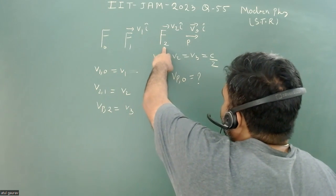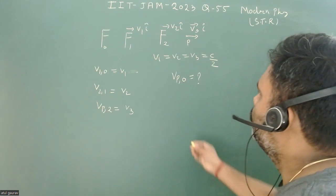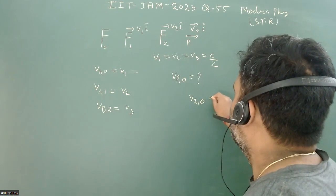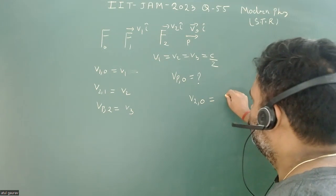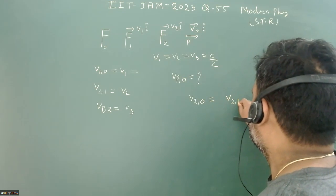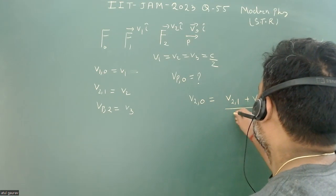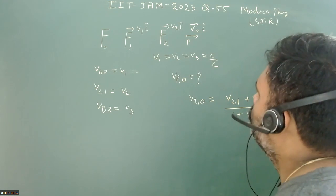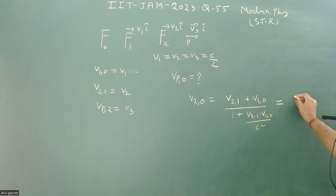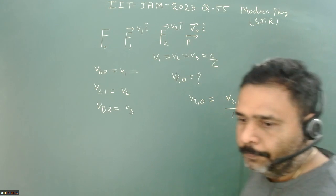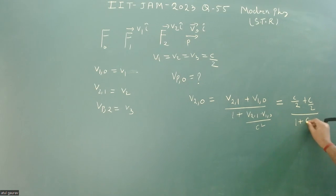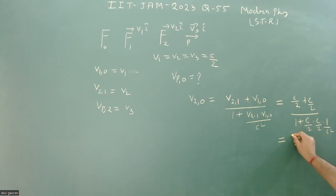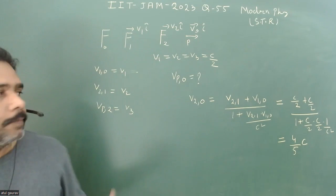First, we will calculate the velocity of F2 with respect to F0. Using the relativistic velocity addition formula: velocity of F2 w.r.t. F0 = (v21 + v10) / (1 + v21·v10/c²) = (c/2 + c/2) / (1 + (c/2)(c/2)/c²), and this value comes out to 4c/5.